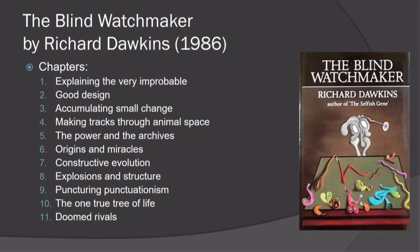He wrote The Blind Watchmaker in 1986, and many consider it a classic work in this field. It's not an academic book — it's meant for the popular audience. He summarises his case for Darwinian evolution. The chapters include explaining the very improbable, good design, accumulating small change, etc. I'm going to give a brief summary of the contents of each of these chapters.